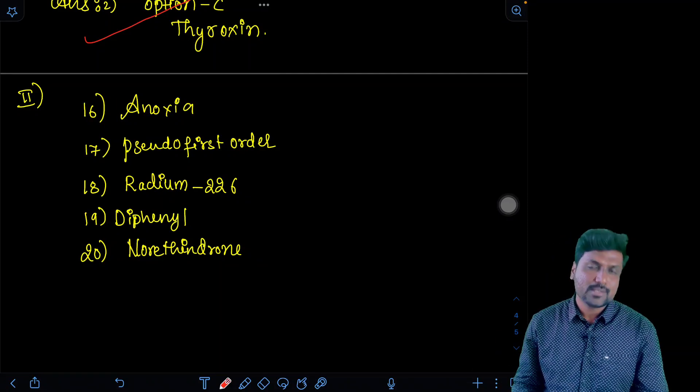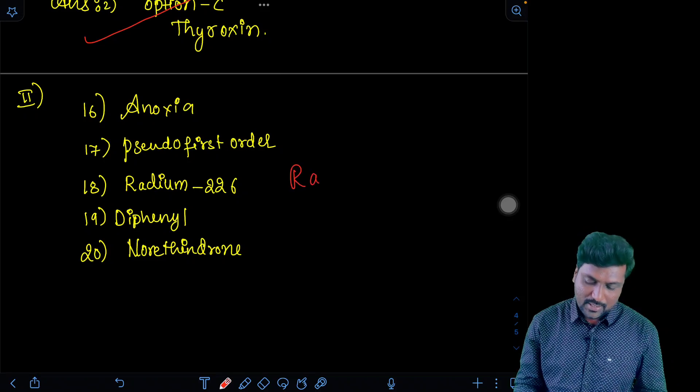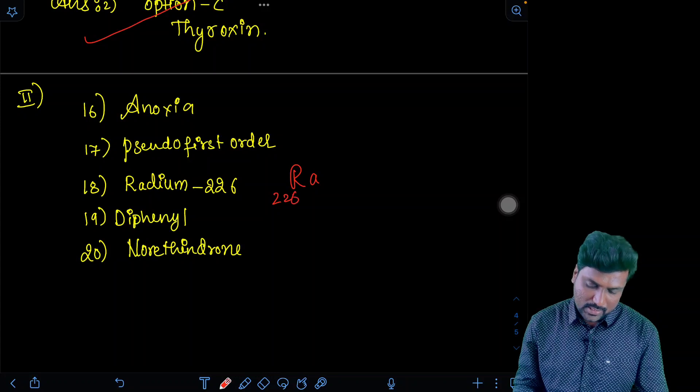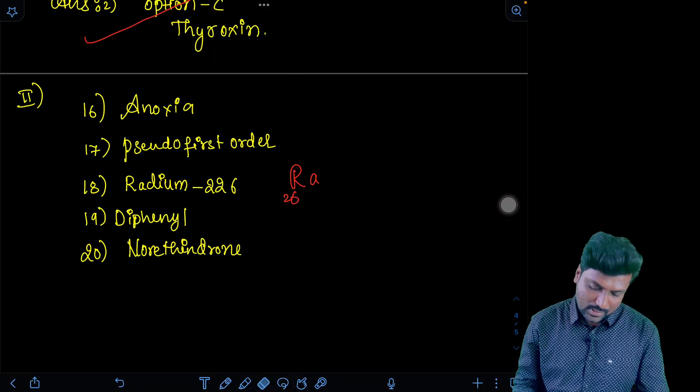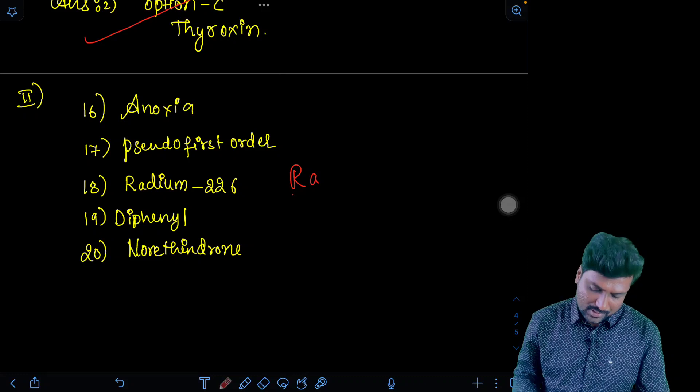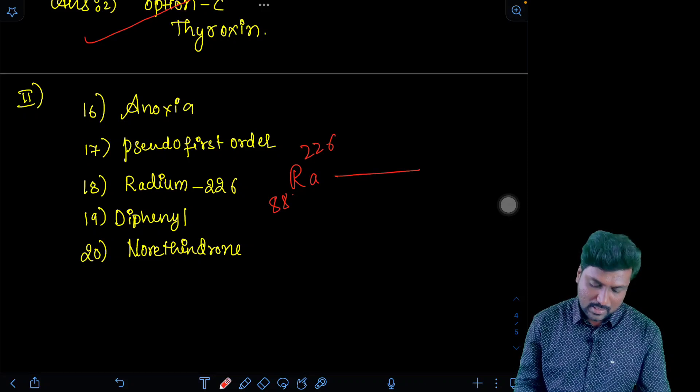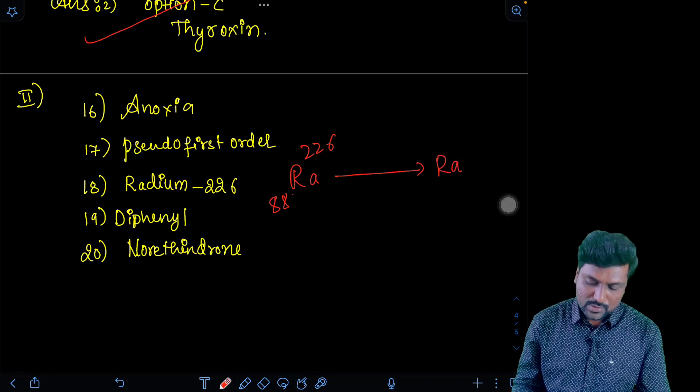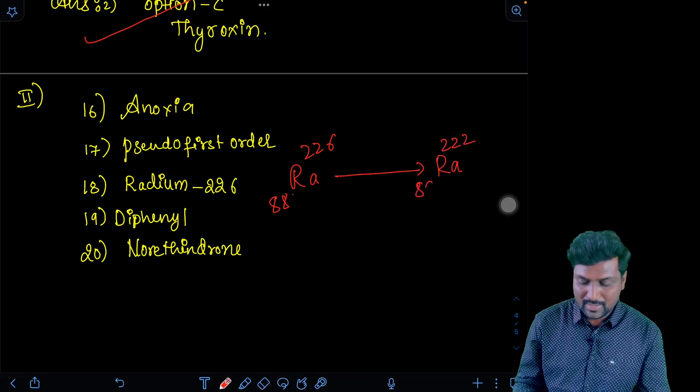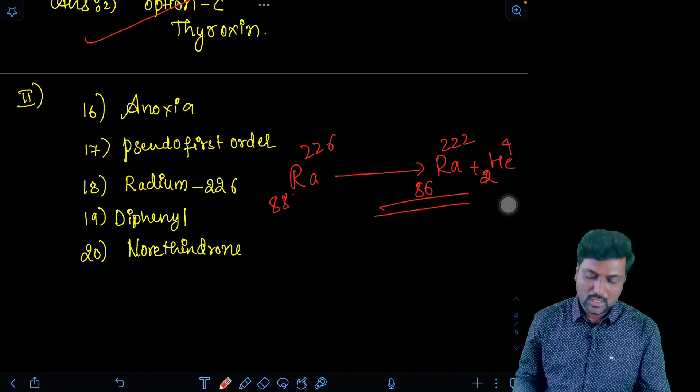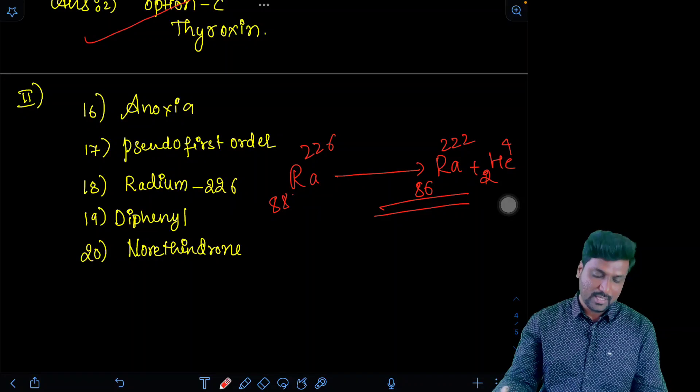The 18th question: radon is obtained as a decay product of radium. Radium-226 with atomic number 88, mass 226, after decaying will produce radon with mass 222 and atomic number 86. Helium is having atomic number 2 and mass number 4.